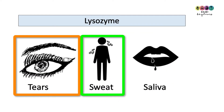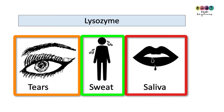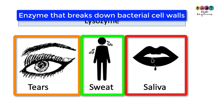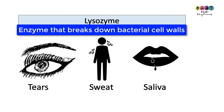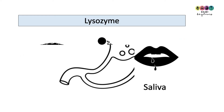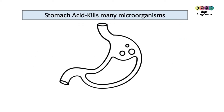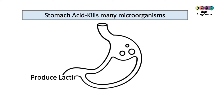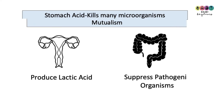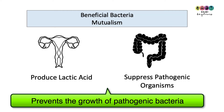Lysozyme is not only found in mucus — it's also found in tears, sweat, and saliva. Remember, lysozyme is an enzyme that breaks down bacterial cell walls. The hydrochloric acid in the stomach kills many microorganisms.